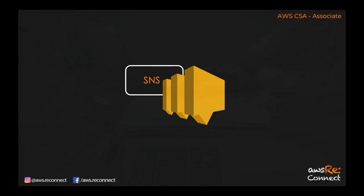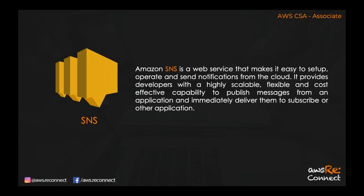The third service is SNS — Simple Notification Service. Amazon SNS is a web service that makes it easy to set up, operate, and send notifications from the cloud. It provides highly scalable, flexible, and cost-effective capability to publish messages from an application and immediately deliver them to subscribed recipients. To receive SNS notifications, you need to subscribe to a topic — similar to email validation when signing up for a blog.